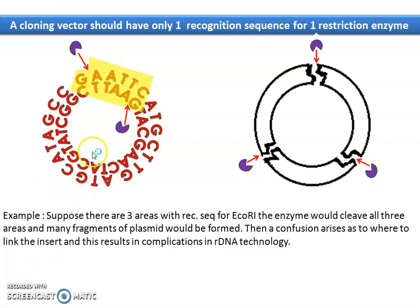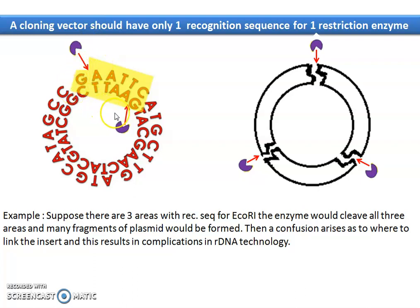Another important thing about the sequence: G-A-A-T-T-C is the recognition sequence for ECO R1. Suppose a cloning vector has a particular recognition sequence to be cleaved by ECO R1 — this same sequence should not exist anywhere else in the vector. If you read the plasmid sequence, you will not see the same palindrome G-A-A-T-T-C anywhere else.